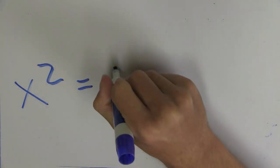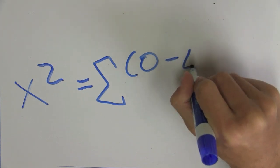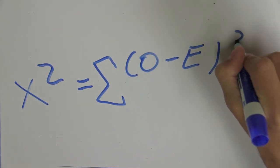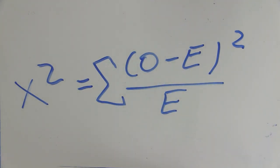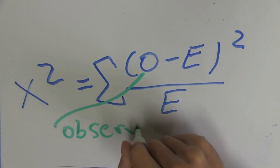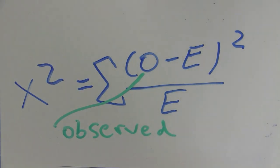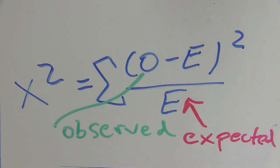But what is the chi-square formula? The chi-square formula states chi-square is equal to the sum, sigma, that's what that sign is, the sum of O minus E squared divided by E, where O are the numbers of observed data, and E are the numbers of expected data from the hypothesis.